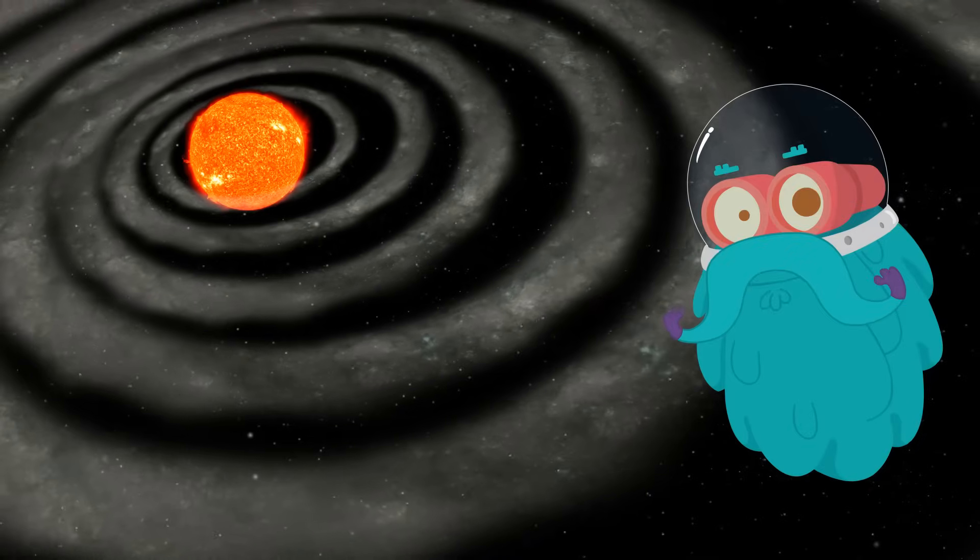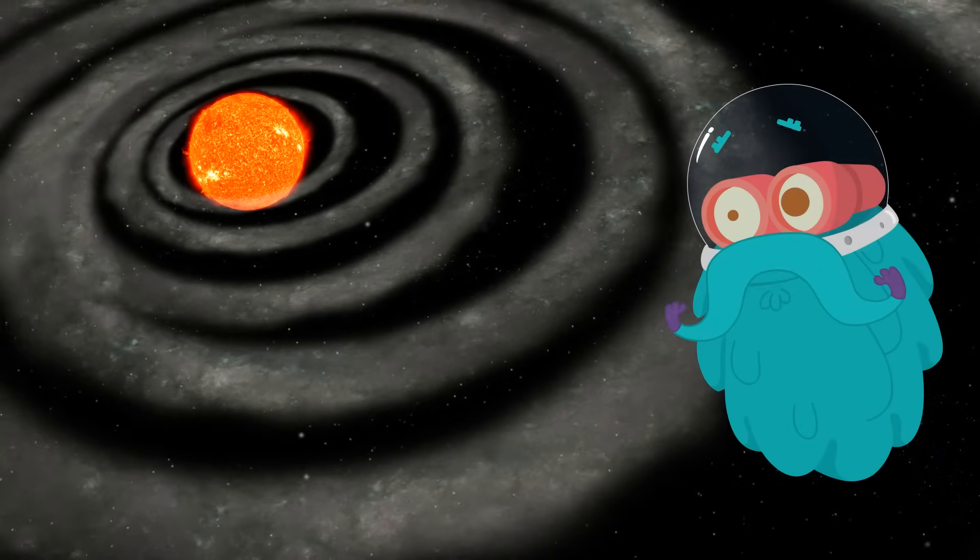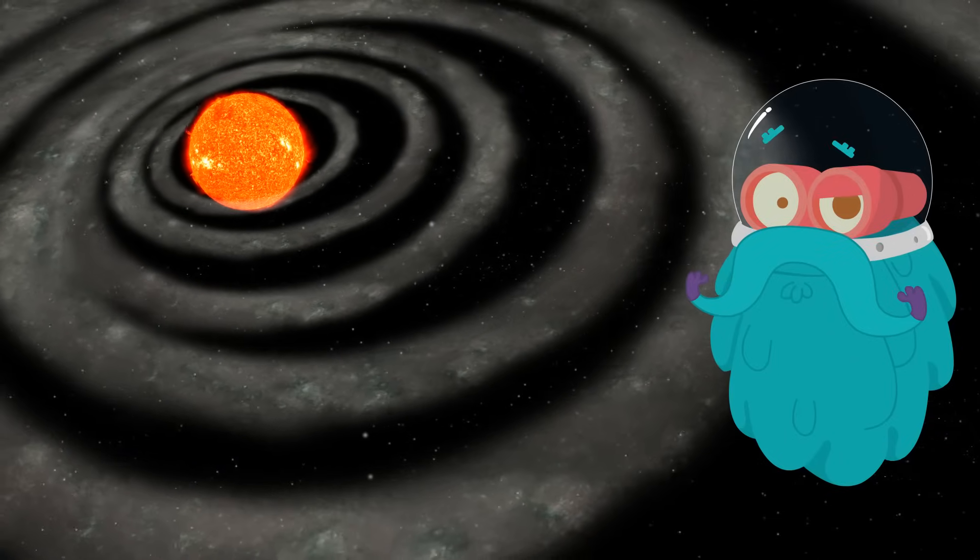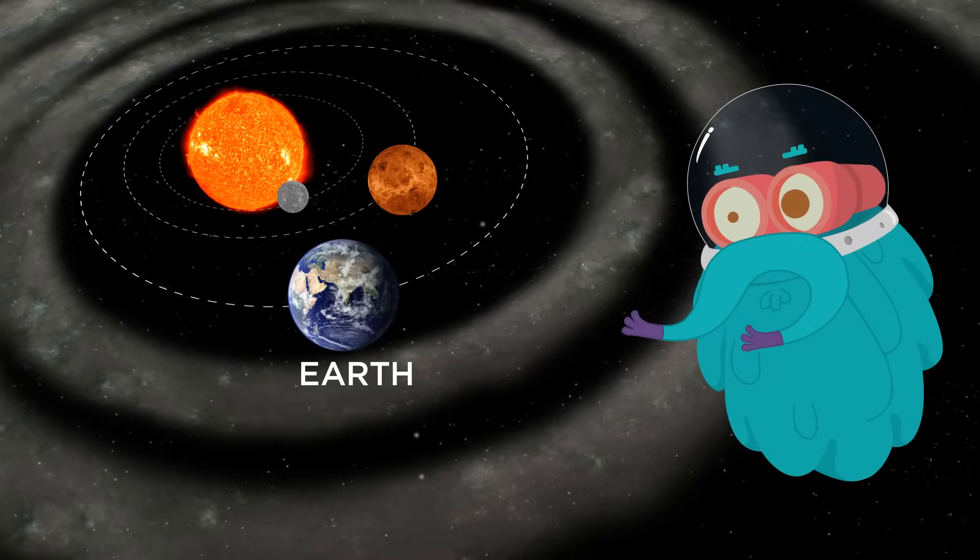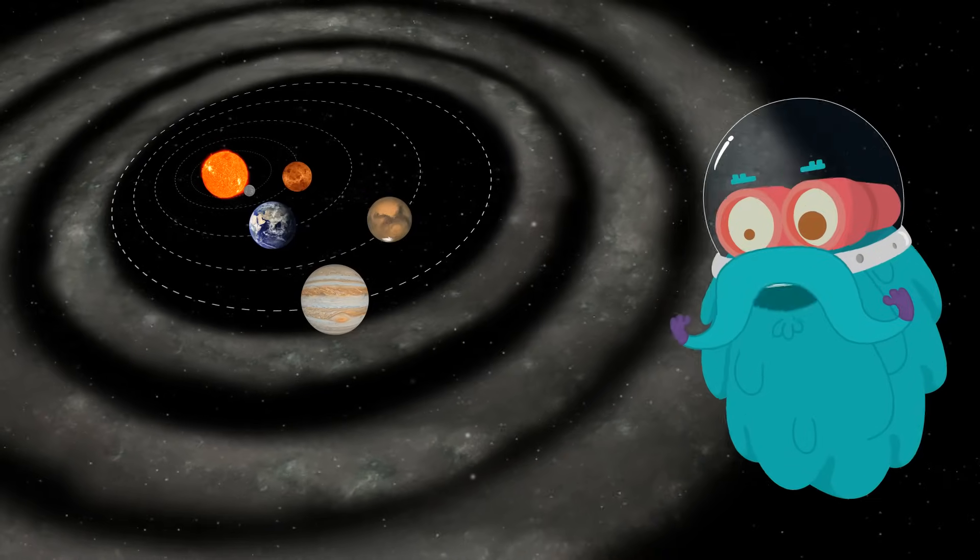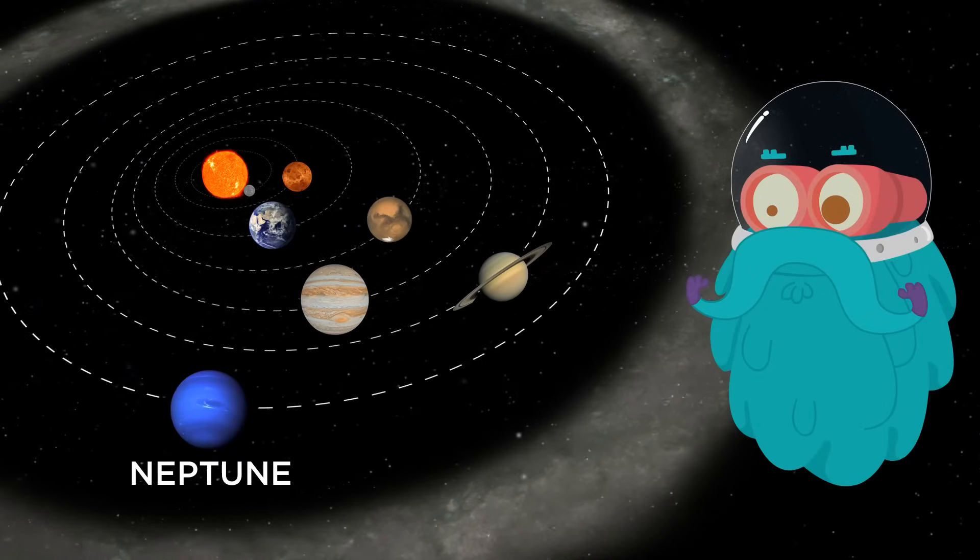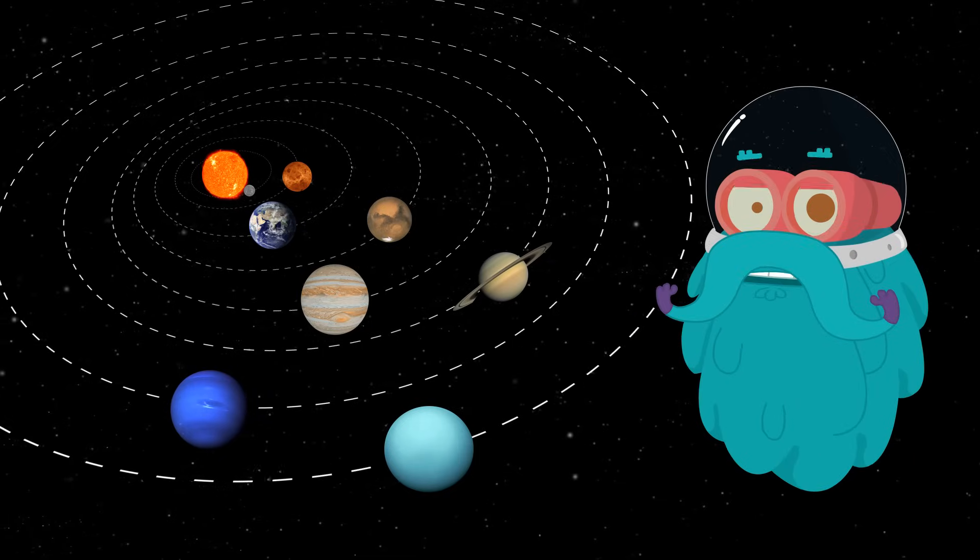It is also believed that since the centre of the solar nebula was hot, it was easier for some planets to form in there like Mercury, Venus, Earth, Mars and Jupiter. The rest of the cold planets like Saturn, Neptune, Uranus, etc. were formed at the edges.